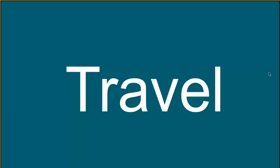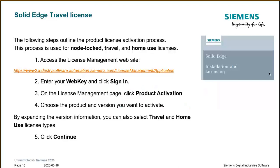Another type of license we'll discuss is the travel license. This is useful when you're on the road and need to do some work off your company's premises. With a travel license, you can obtain it using the link displayed on screen. You access the license management website and need two pieces of information: your WebKey credentials and your Composite 2 ID number. On the license management page, click Product Activation and choose the product and version you want to activate. By expanding the version information, select Travel License, then click Continue.